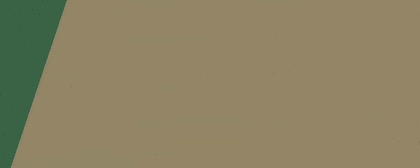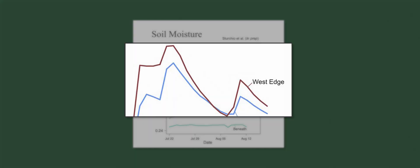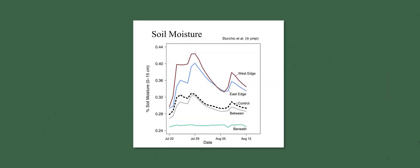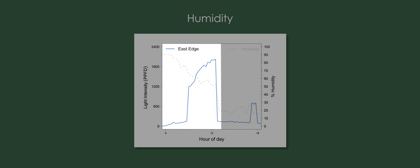So on one edge, the reason why you get more productivity is because you're receiving a lot more soil moisture. And soil moisture is really important for grass productivity in a water-limited system like out here in Colorado. And on the other edge, the reason why you're seeing a lot more productivity, the most productivity even, is because it's getting this morning sunlight.